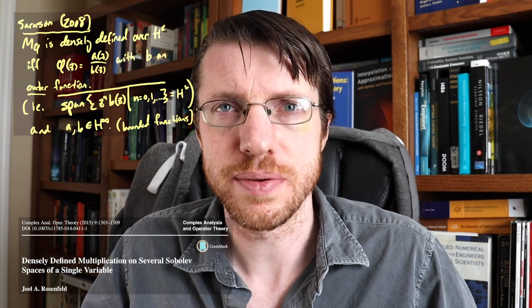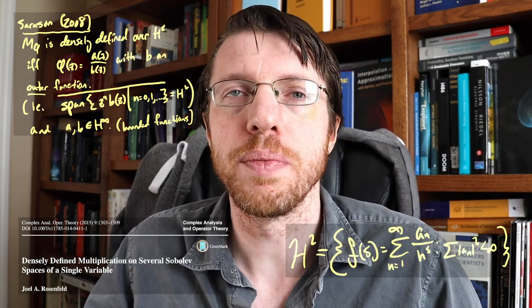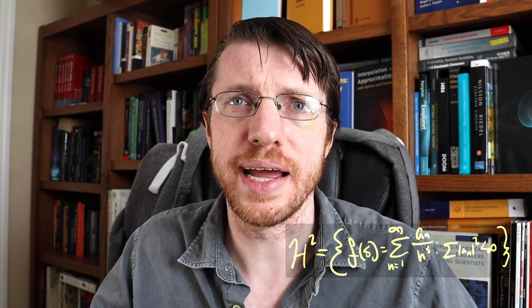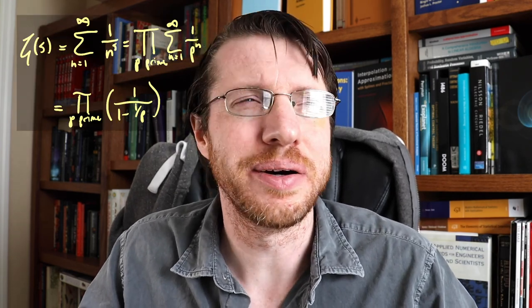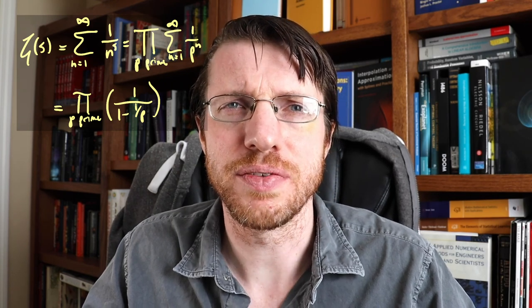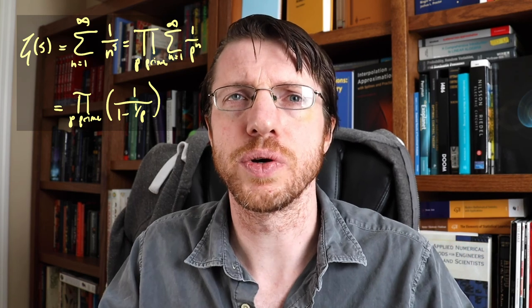There's another space that is fairly interesting to look at: the Hardy space of Dirichlet series — not the Dirichlet space, but the Hardy space of Dirichlet series. Basically, if you take a Dirichlet series, which is used all over number theory, it's the sum of a_n times 1 over n to the s. Euler was the first to really investigate a series like this, and it comes up in the investigation of the prime number theorem, because if you take the zeta function, you can factor it according to primes.